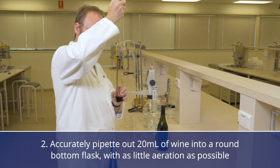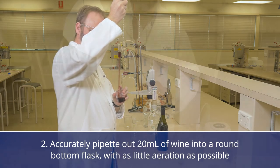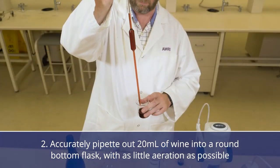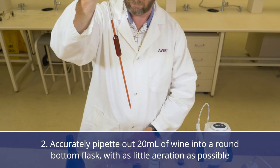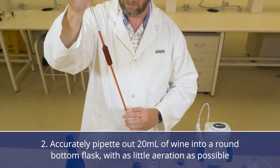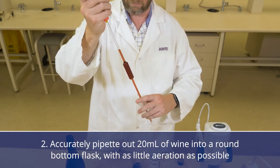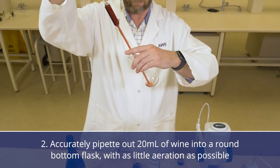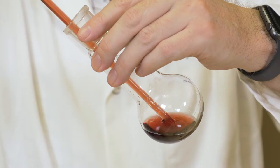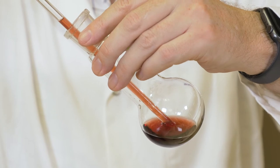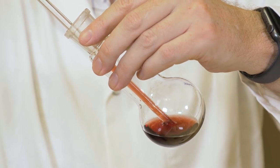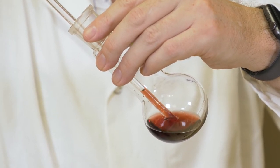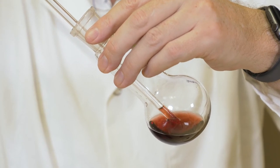The next step is to accurately pipette out 20 mL of wine into a round bottom flask. It is important to do this with as little aeration as possible to ensure that no sulfur dioxide is lost during the procedure. Keep the tip of the pipette below the liquid surface as you empty it and then drain the pipette by holding the tip against the side of the flask.